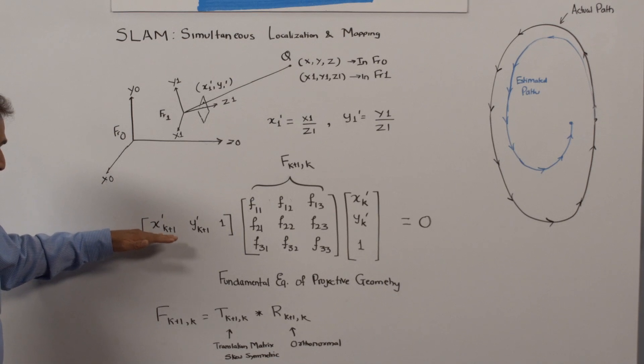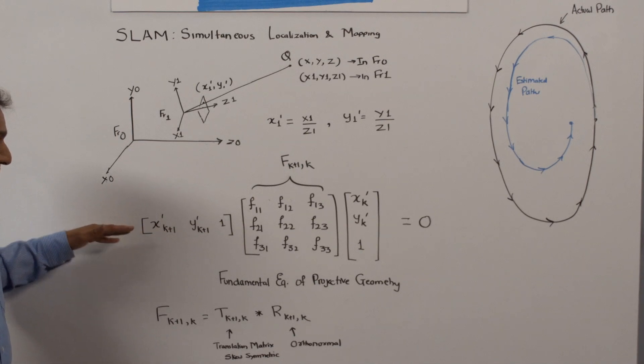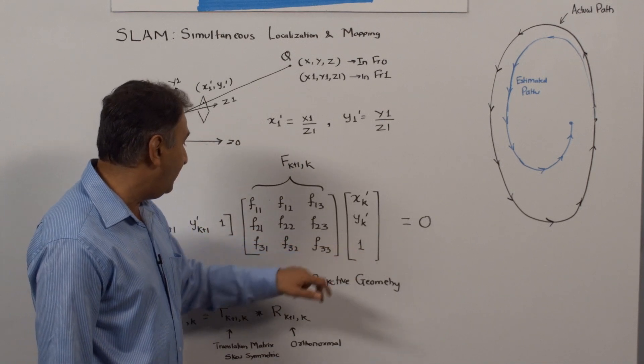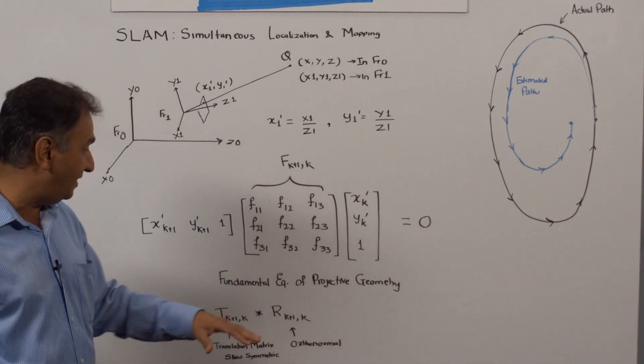For various key points, we write the same equation for various key points. Obviously the projected coordinates change, but the central matrix, which is the fundamental matrix, stays the same.